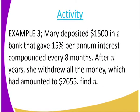Activity for today: Mary deposited $1,500 in a bank that gave 15% per annum interest, compounded every eight months. After 10 years, she withdrew all the money she had earned, which amounted to $2,655. Find the end value. That is the activity.